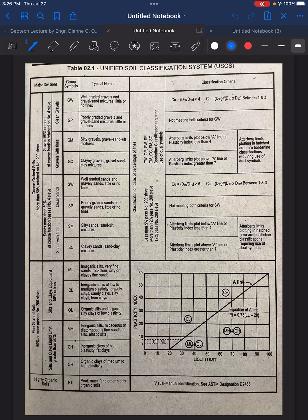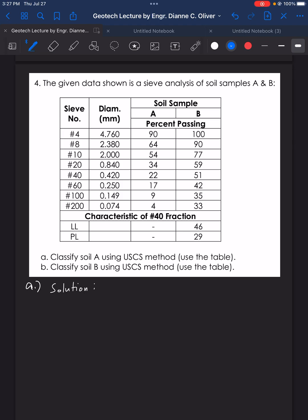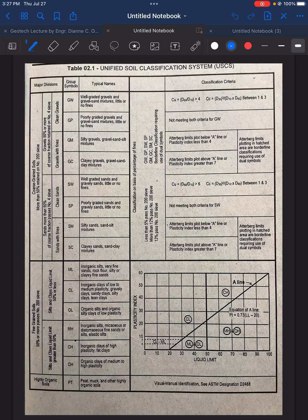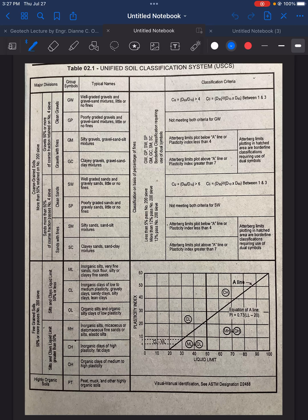We will be using the table, the USCS table. Looking at this example, we will just focus on soil A data. For the table, here we will start. We are going to choose between is it a fine-grained soil or a coarse-grained soil. To classify it as fine-grained soil, it should have 50% or more passing sieve number 200.